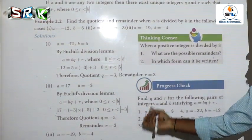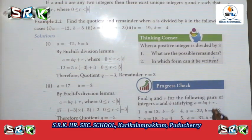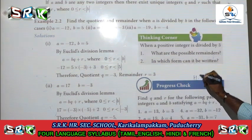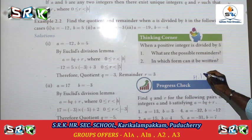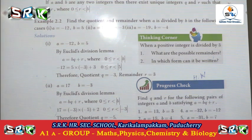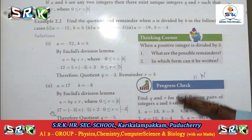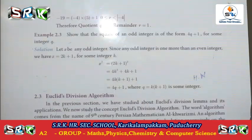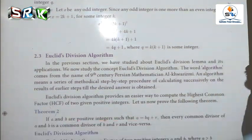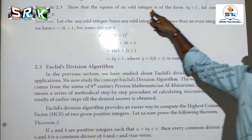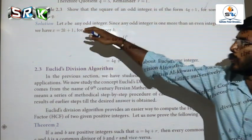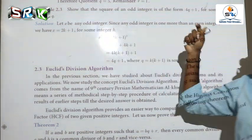The remaining cases will be homework type questions — progress check homework questions. Complete the first five sums. Next, for a very important question, example 2.3: Show that the square of an odd integer is of the form 4Q plus 1 for some integer Q.